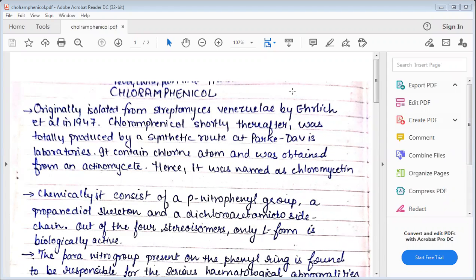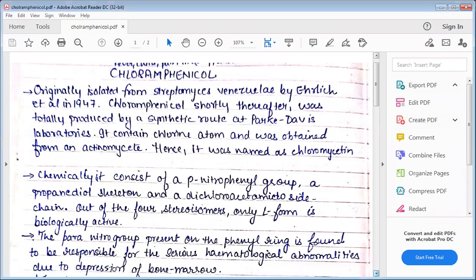Chloramphenicol was shortly thereafter totally produced by a synthetic route at Parke-Davis laboratories. It was named for the aromatic structure, specifically the para-nitrophenyl group.